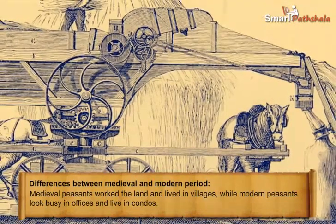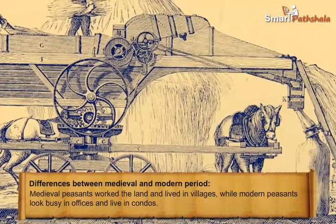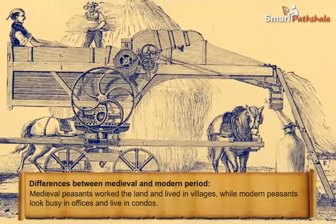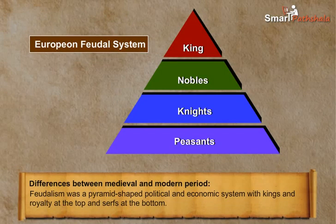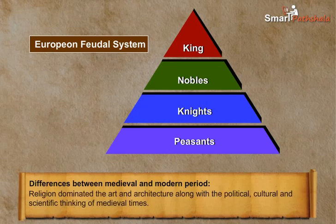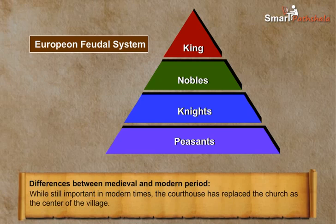Now we will study the differences between the medieval and modern period. Medieval peasants worked the land and lived in villages, while modern people work in offices and live in condos. Feudalism was a pyramid-shaped political and economic system with kings and royalty at the top and serfs at the bottom, comparable to modern capitalism with a tiny controlling elite ruling over the middle and lower classes. Religion dominated the art, architecture, political, cultural and scientific thinking of medieval times, while in modern times the courthouse has replaced the church as the center of the village.